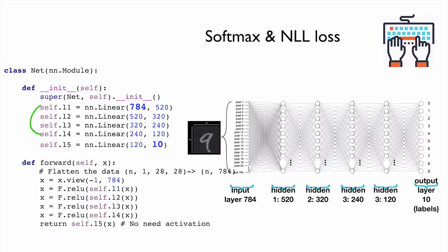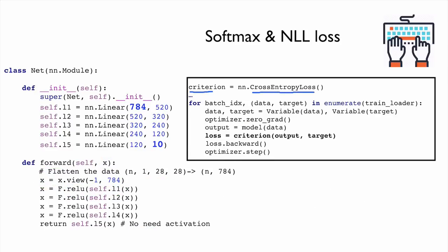Once we have these layers, we connect them in the forward function. The input x has shape (n, 1, 28, 28), so first we flatten it to (n, 784) using a reshape command. Then we feed it through each layer sequentially. In the last layer, we do not apply any activation function because we use the raw logits as input to the cross-entropy loss function.